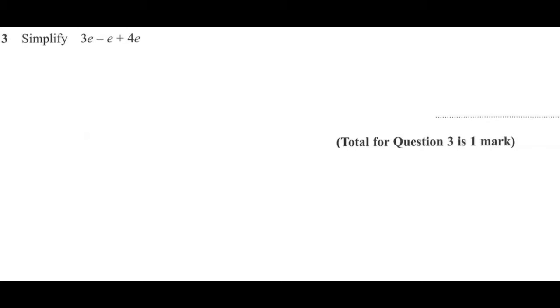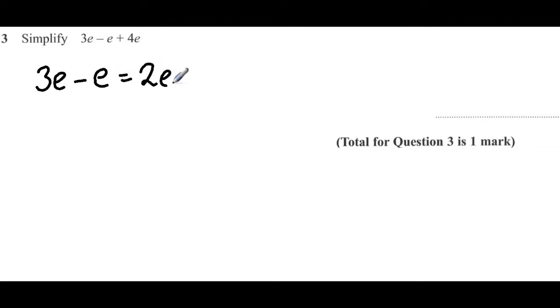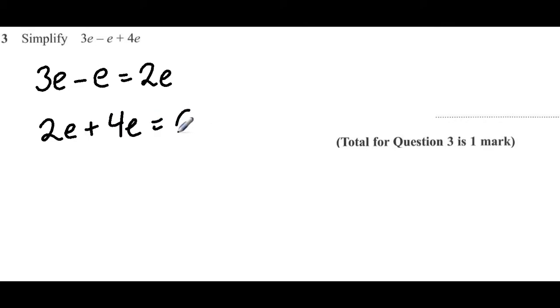Question 3. Simplify 3e minus e plus 4e. Starting with the first two terms: 3e minus 1e equals 2e. Then 2e plus 4e gives us 6e. So our final answer is 6e.